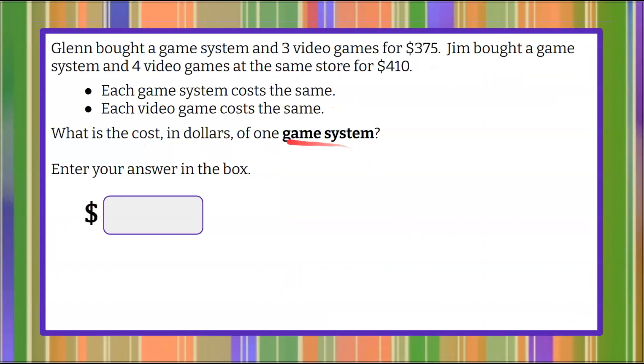Here's our question today. Glenn bought a game system and three video games for $375. Jim bought a game system and four video games at the same store for $410. We're told that each game system costs the same, and each video game costs the same. We're asked, what is the cost in dollars of one game system? And then we're going to enter your answer in the box.